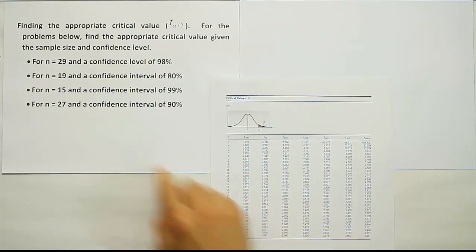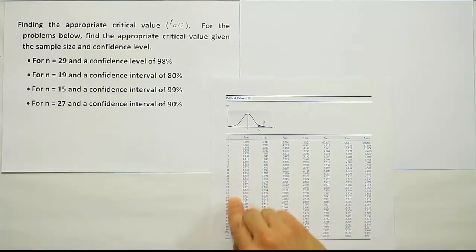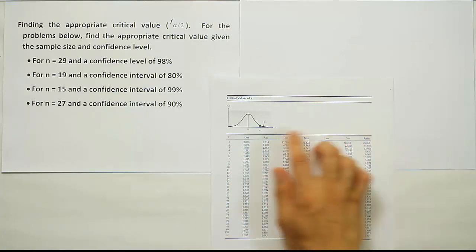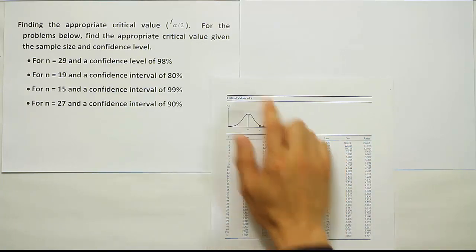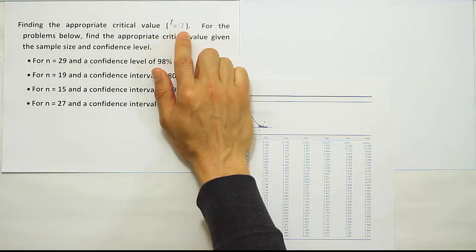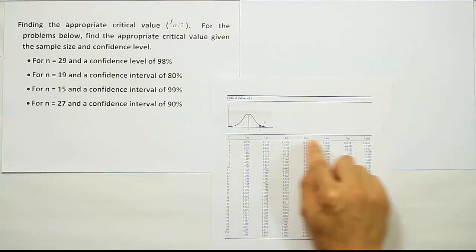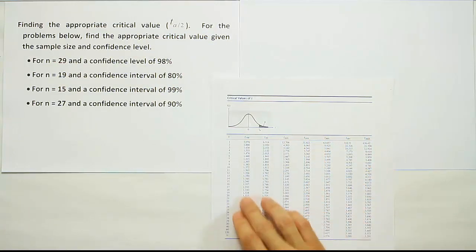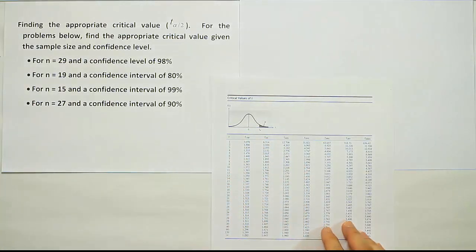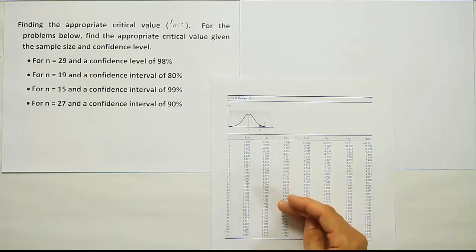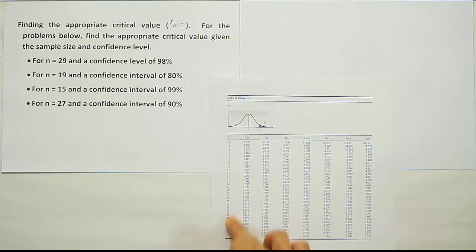Those degrees of freedom — for example, 28 in our first problem — are located in the leftmost column. You find 28 there, then go over to the column with the appropriate tail area. Because we're looking for T alpha divided by two values, the tail area is alpha divided by two. We find that in the top row, then come down to our degrees of freedom in the leftmost column, and that gives us the T value. When we were looking for Z values, we went straight to the bottom every time. Here, we stop at our corresponding degrees of freedom.